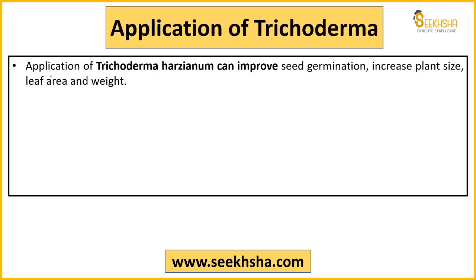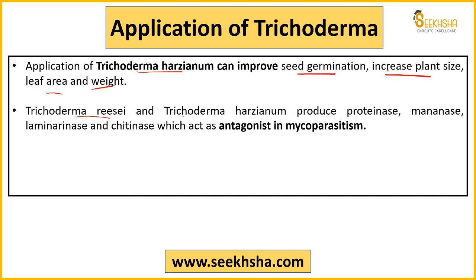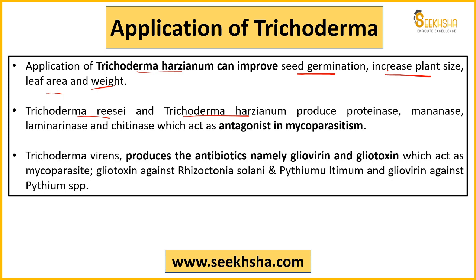Trichoderma harzianum can improve seed germination, plant size, leaf area, and plant weight. The combination of Trichoderma viride and Trichoderma harzianum helps produce proteinase, mannanase, laminarase, and chitinase, which help control parasitism in crops. Trichoderma viride produces antibiotics — glio virin and glio toxin — which help control parasites. Glio toxin works against bacterial infections like Rhizoctonia solani and Pythium.